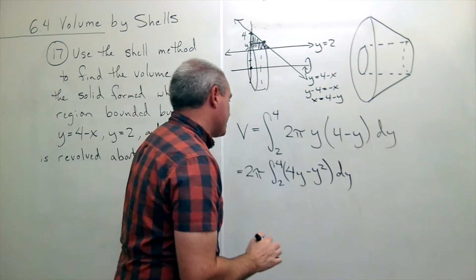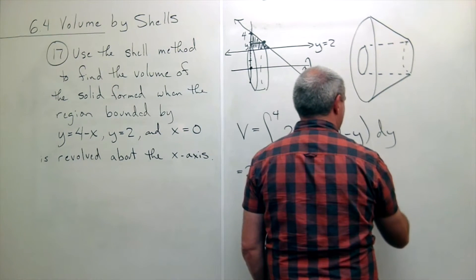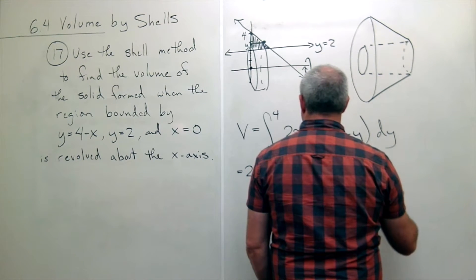Let's take an anti-derivative. If I do, I get this is two pi times.